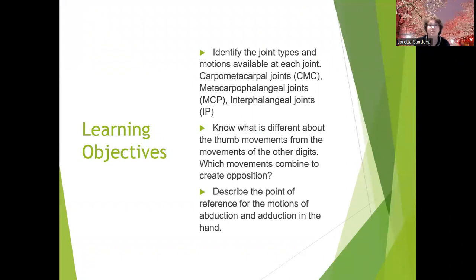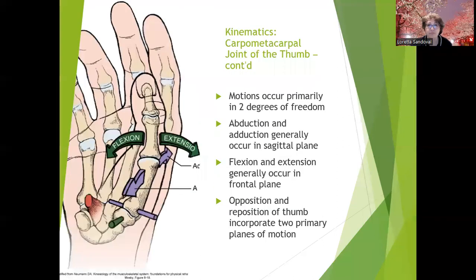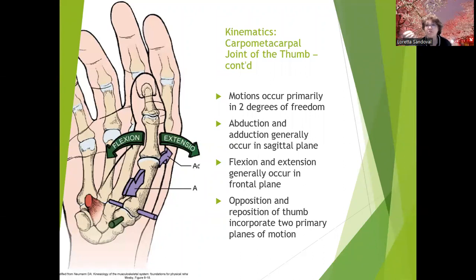We talked a little about joint differences in the last lecture. The point of reference for abduction and adduction is the middle finger. The carpometacarpal joint of the thumb has motions that occur primarily in two degrees of freedom: abduction and adduction generally occur in the sagittal plane, and flexion and extension in the frontal plane. Opposition and reposition of the thumb incorporate the two primary planes of motion — opposition is touching the other fingertips, and reposition is returning to anatomical position.